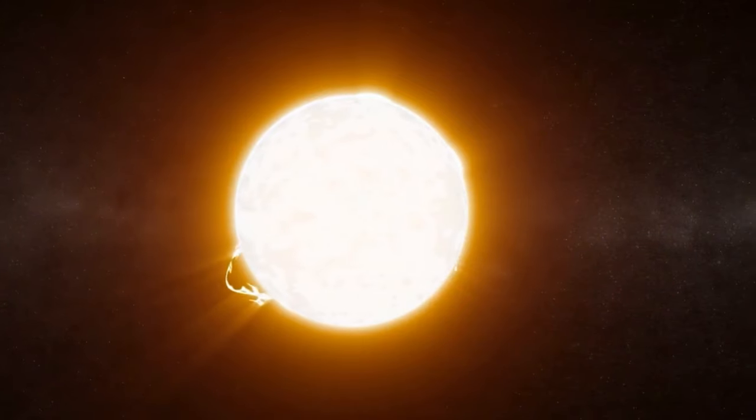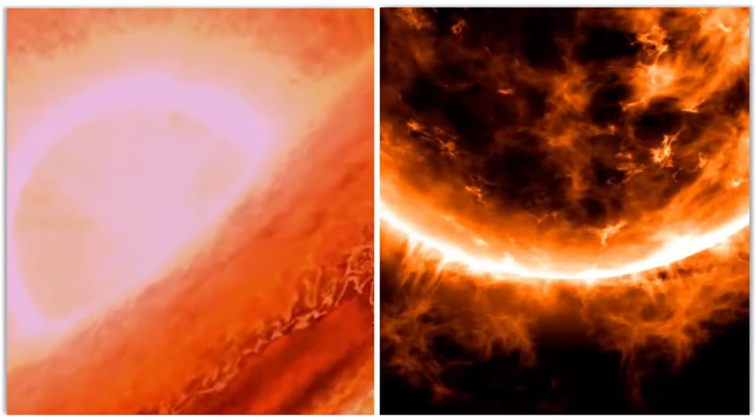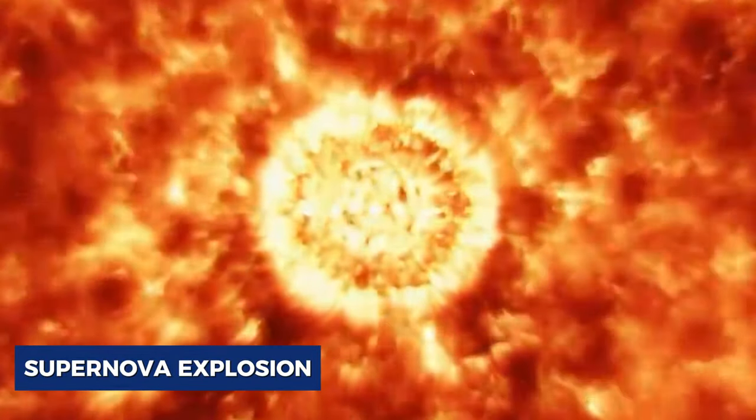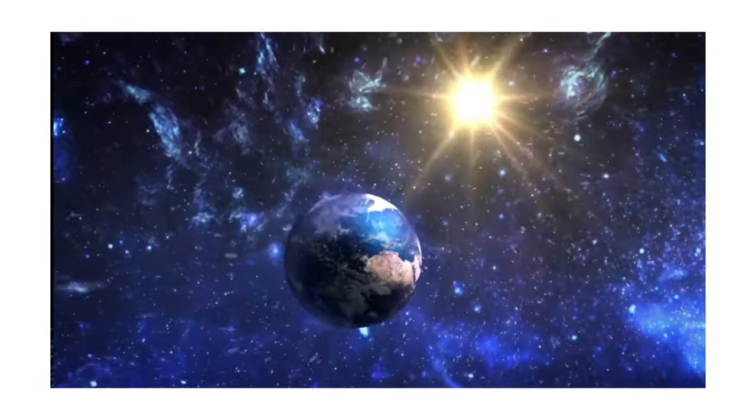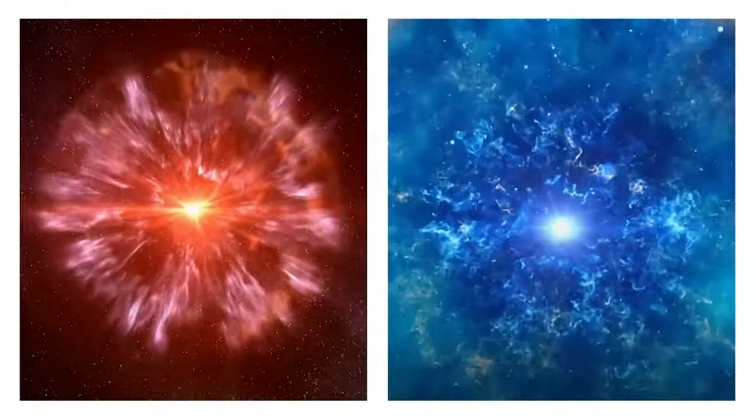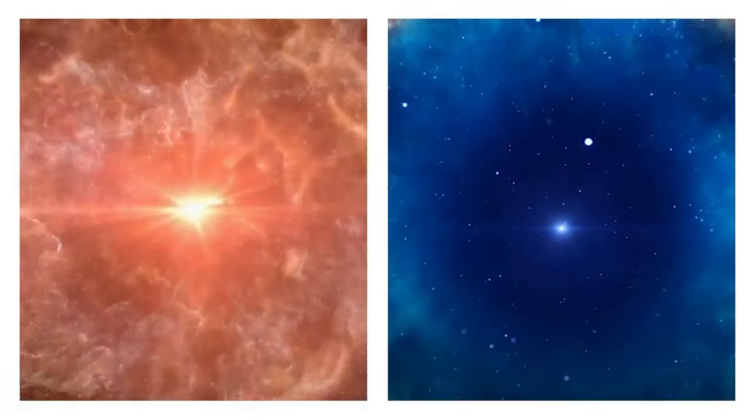The light from Betelgeuse faded by 60% in 2021 before gradually increasing again the following year. There were initial fears that a supernova explosion was imminent due to this dimming. It turned out, though, that the gas cloud in space was responsible since it passed before the star. Problem solved, yet the possibility of a supernova remains.